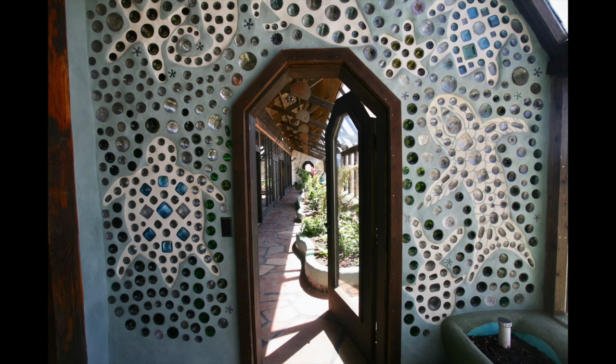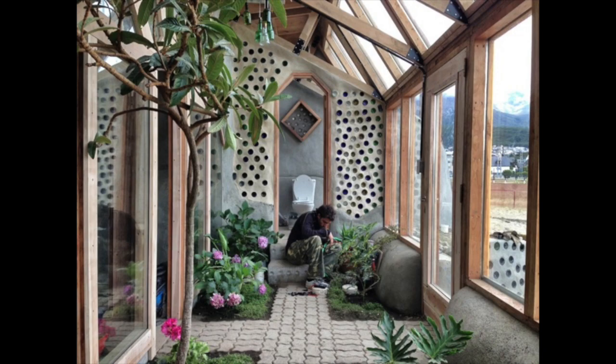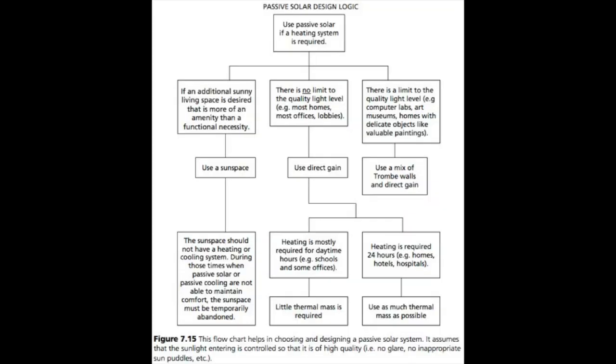Sun spaces advantages: very attractive amenity; extra living space; can function as a greenhouse. Disadvantages: most expensive system; least efficient; cannot be occupied when too hot or cold. The three main passive solar heating systems are compared by listing the main advantages and disadvantages of each approach. The chart above shows the logic that can be used to design a passive solar space heating system.